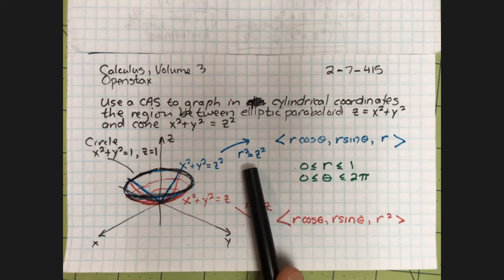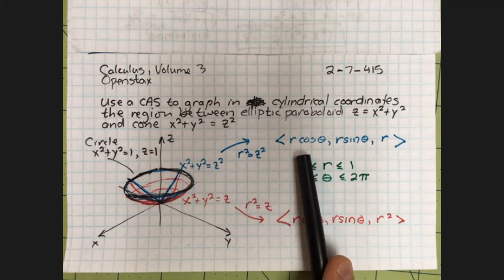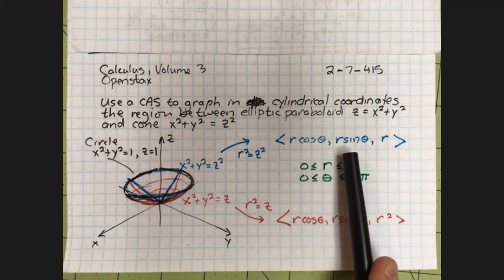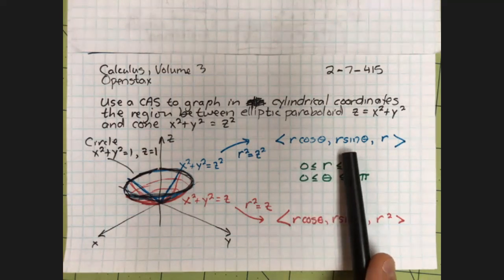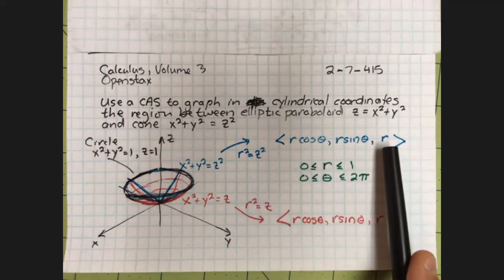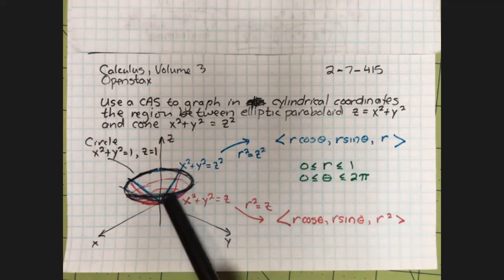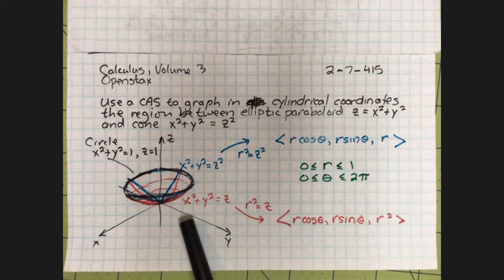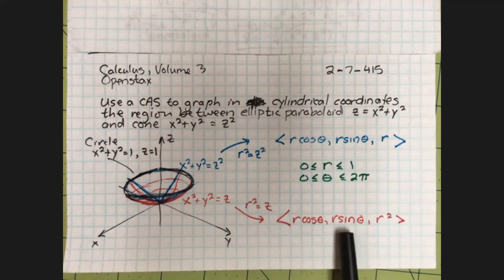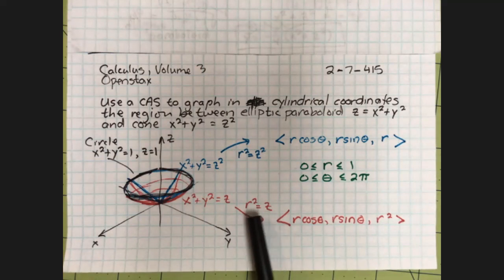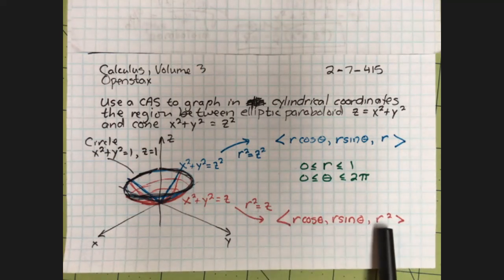Now to realize that graphed in Mathematica, I'm going to plot all the points r cosine theta, r sine theta, and if r squared is z squared, r in place of z. That'll give me the cone that I tried to draw in blue. And for the elliptic paraboloid, r cosine theta, r sine theta, and if r squared is z, then I put r squared in place of the z in the third slot.